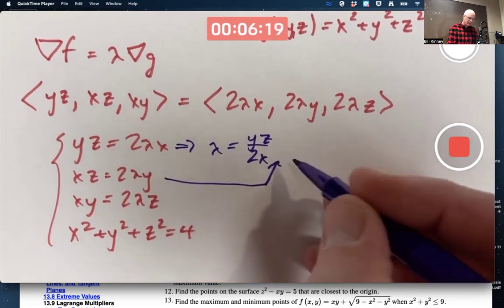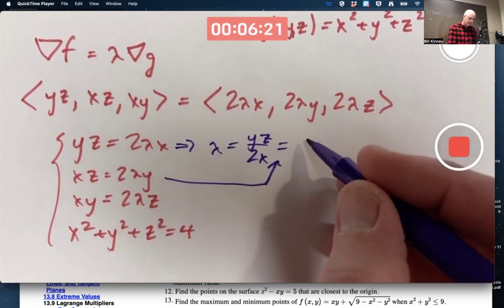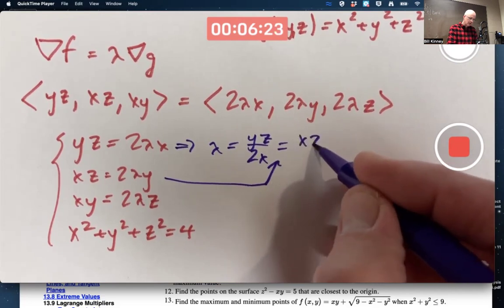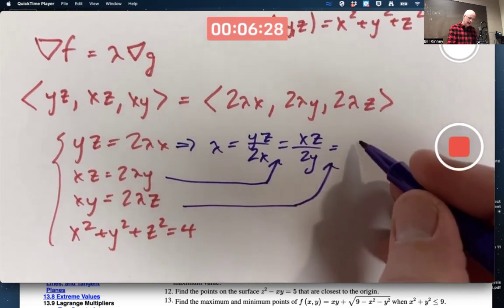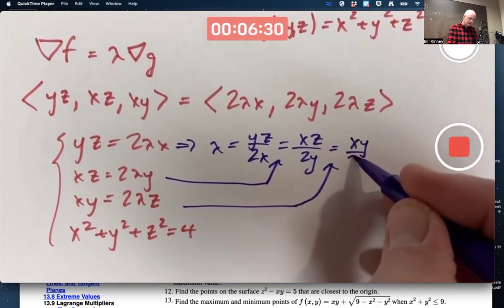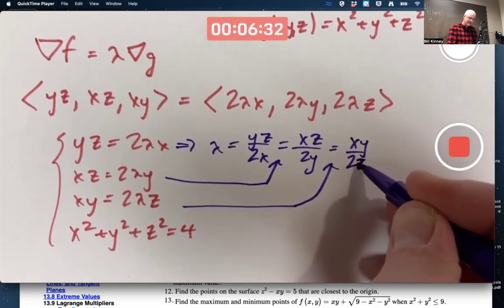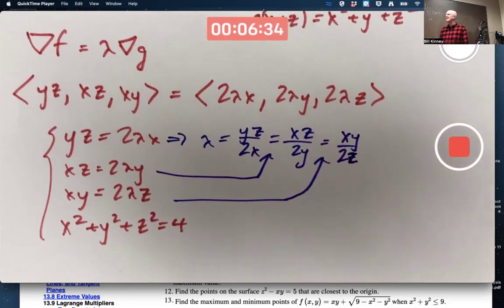It'll equal YZ over 2X. It'll equal XZ over 2Y. It'll also equal XY over 2Z. By symmetry, it should seem like X, Y, and Z should all be the same. By symmetry.